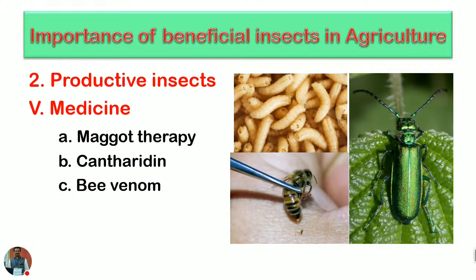In medicine, the utility of maggots is notable: people suffering from diabetes have their wounds treated by maggots, and this maggot therapy has proven to be a boon. Cantharidin is obtained from blister beetles. Bee venom — through the forceful sting of honey bees — is utilized for the treatment of different ailments.